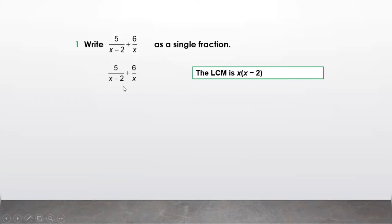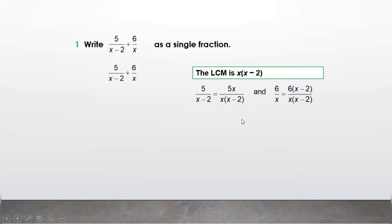We make these two equivalent algebraic fractions with the same denominator. For 5 upon (x minus 2), since the LCM is x(x minus 2), we need to multiply both the numerator and denominator by x. So 5 upon (x minus 2) becomes 5x upon x(x minus 2).